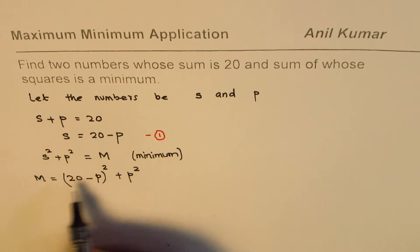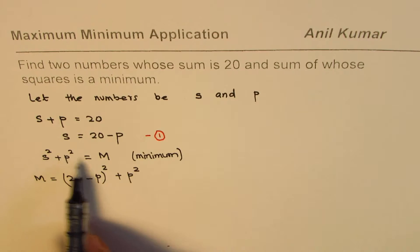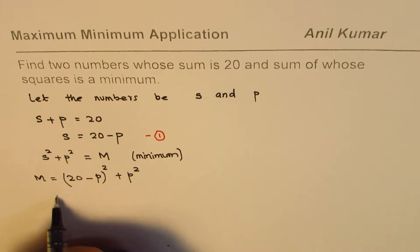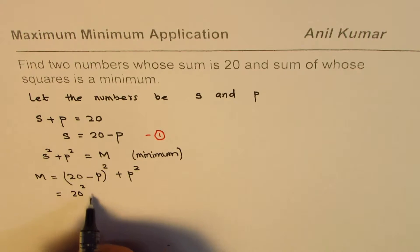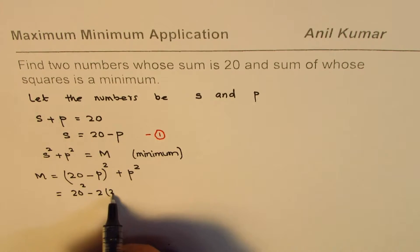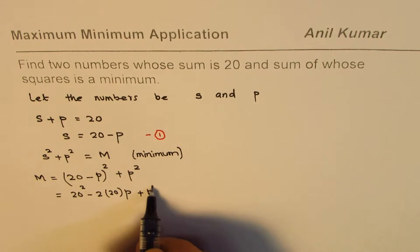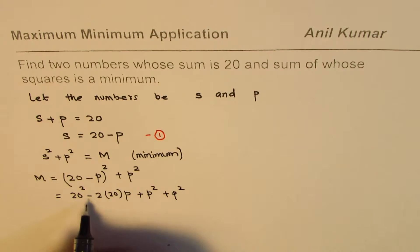That is the sum of their squares. The idea is to minimize this sum of squares. Now we have one single variable; it's like a quadratic equation which we can solve. Let me expand this. When I expand it I get 20² minus 2 times 20 times p plus p², plus p².